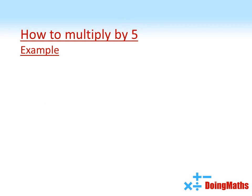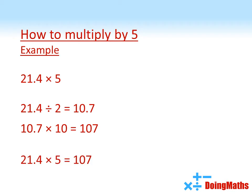Let's try a trickier example now. It also works for decimals. 21.4 times 5. Divide that by 2 is 10.7, multiply that answer by 10, you get 107. And that is our answer.